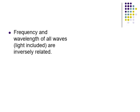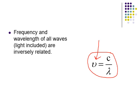Frequency and wavelength are inversely related — as one goes up, the other goes down. They're related by the equation ν = c/λ, where ν is frequency, c is the speed of light (3.0 × 10⁸ m/s), and λ is wavelength. You will need to know this. In a problem, you might be given wavelength to solve for frequency, or vice versa. The speed of light is a constant.